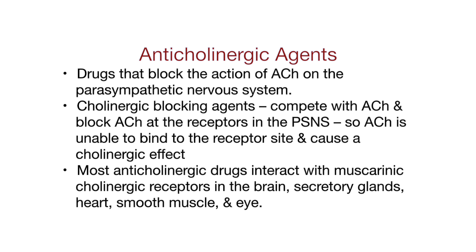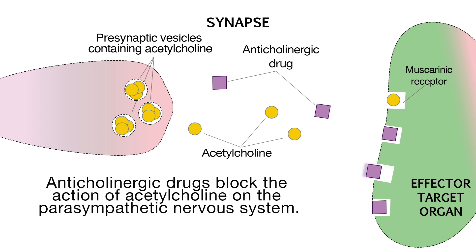Anticholinergic agents are drugs that block the action of acetylcholine on the parasympathetic nervous system. These cholinergic blocking agents compete with acetylcholine and block it at the receptors in the PSNS, so acetylcholine is unable to bind to the receptor site and cause a cholinergic effect. Most anticholinergic drugs interact with muscarinic receptors in the brain, secretory glands, heart, smooth muscle, and eye.